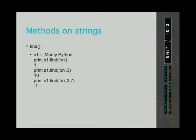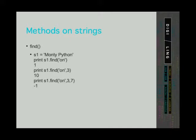Here are examples on how to implement the find method. We want to look for the substring 'on' in our string Monty Python. We call the method find and define the substring 'on' in the round brackets. The program returns 1, meaning the first occurrence of 'on' starts at index 1. If we start searching from index 3, the program returns 10. In the last example, with starting index 3 and ending index 7, the program returns minus 1, which means the substring was not found in that range.